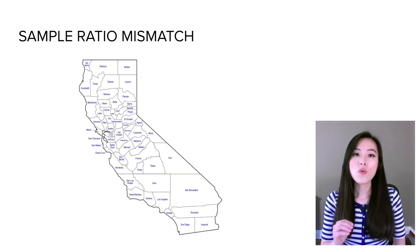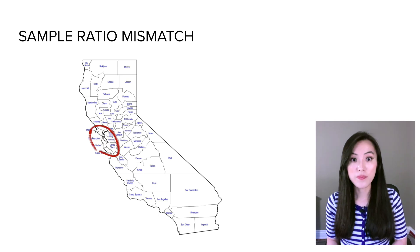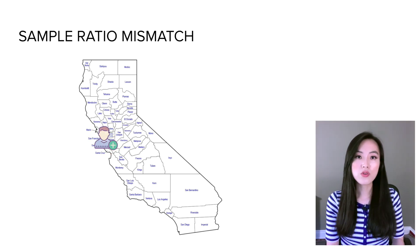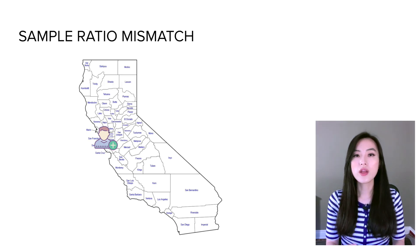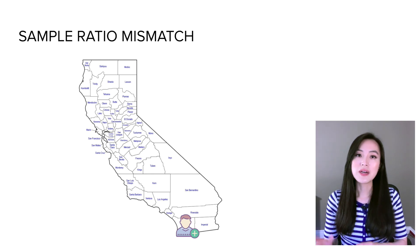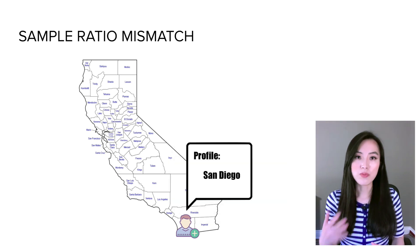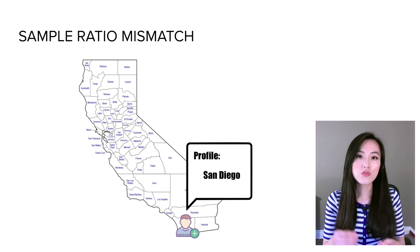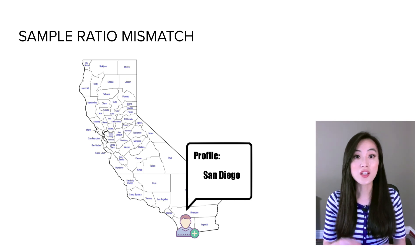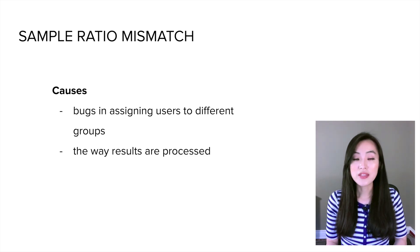For example, suppose you want to run an experiment targeting users in the San Francisco Bay Area, so you assign a user to the treatment group because his profile shows he's in San Francisco. However, he has already moved to a different location but hasn't updated his profile yet. During the experiment he updates his profile, so when you get the results you need to filter out users who are not in the target region.